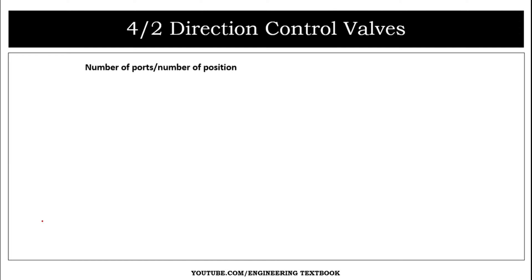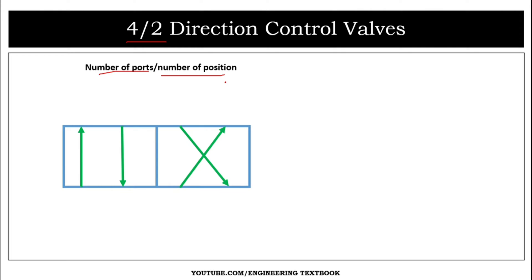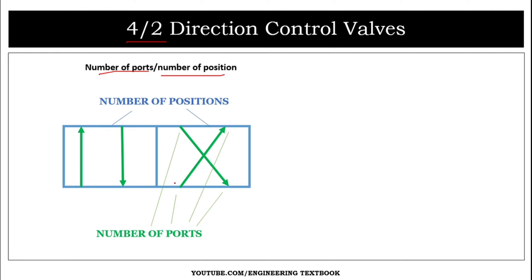Hello everyone, welcome to my channel Engineering Textbook. Today's topic of discussion is the 4 by 2 direction control valve. Here, 4 indicates the number of ports and 2 indicates the number of positions. Here is the symbol of the 4 by 2 direction control valve, which consists of two boxes — the boxes represent two positions — and four ports.